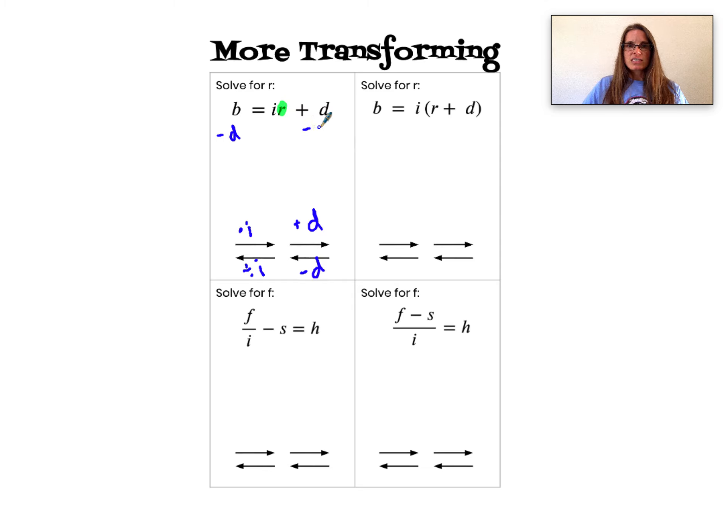We begin by subtracting d from both sides of the equation. That gives me b minus d equals i times r. My last inverse operation is to undo the fact that I'm multiplying r by i. So I'm going to divide both sides by i.